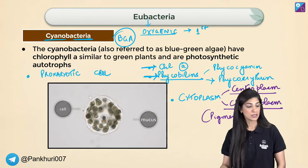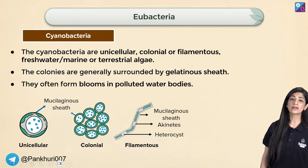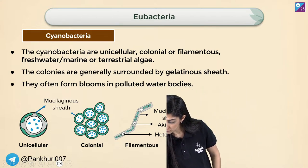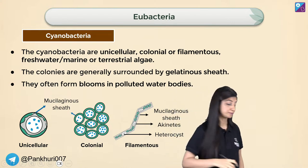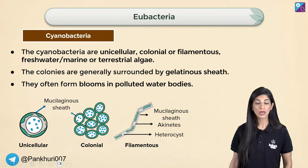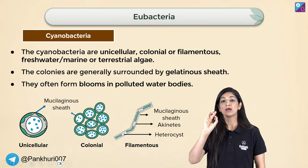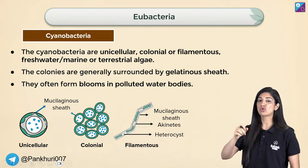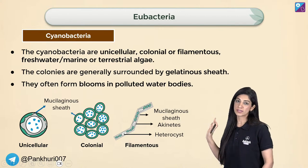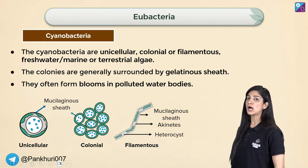Monera contains single prokaryotic cells — that was the condition set for Monera. Cyanobacteria, however, is that form of eubacteria which can appear to be multicellular. Listen carefully — it appears to be multicellular. Some authors write 'unicellular and multicellular,' which is technically a mistake — the correct phrasing is 'appears to be multicellular.'